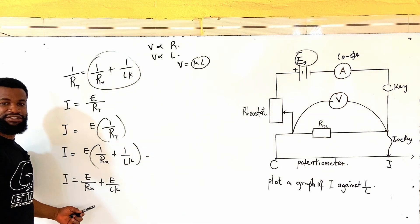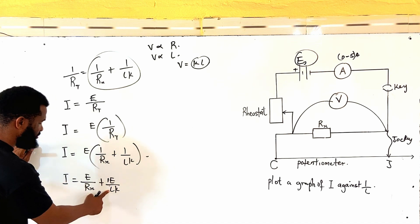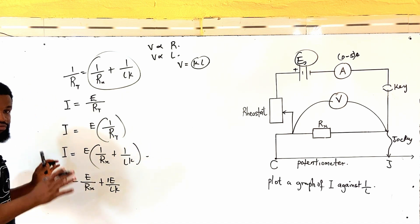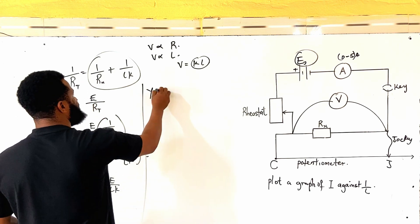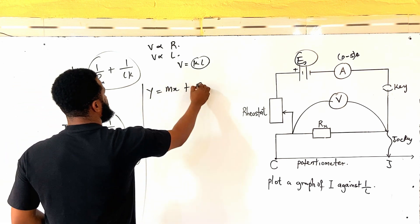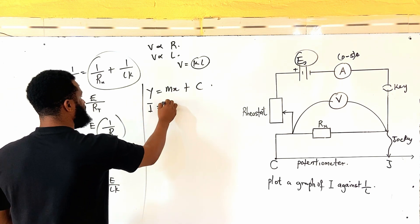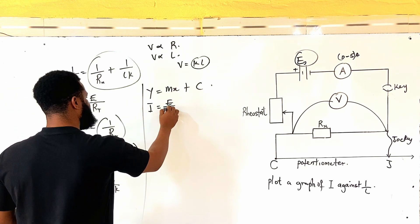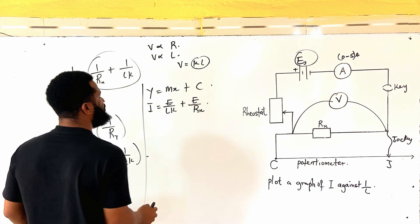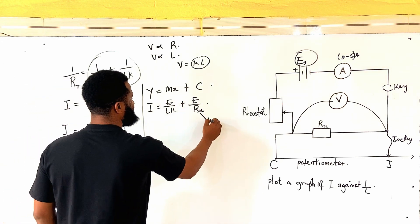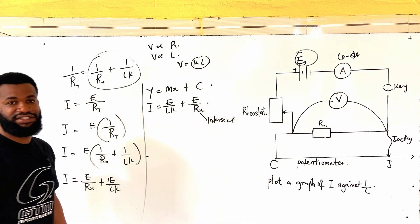Now, this is what we are asked to do. If you check this very well, you see that this is 1 over L. So, I am plotting a graph of, I am going to rearrange this to a general equation. Therefore, general equation is given as Y equals MX plus C. I am comparing this, so I am going to have I is equal to E all over LK plus E over R sub X. So, this is the intercept. This is the intercept.